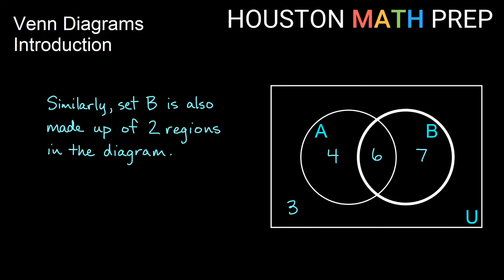We can do a similar thing with B. We have seven elements that are only in B, but we also have the six elements in B that overlap with A. So we have six elements plus seven elements. We would say that the number of elements in B is 13.